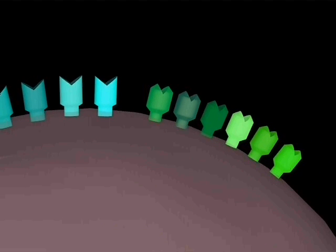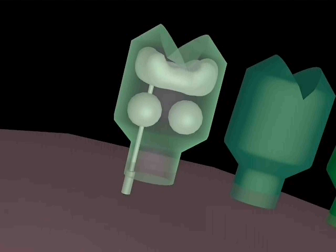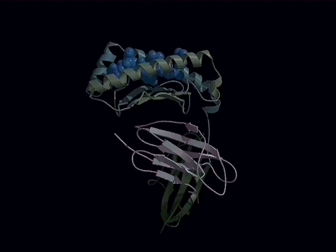Each of the class I genes produces a single alpha chain which folds itself up and interacts with another molecule called beta-2 microglobulin, which comes from a different gene locus.